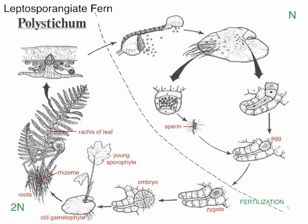In Polystichum, if you look at the bottom of the leaf, there's a series of little spots called sori. Each sorus is a cluster of sporangia and associated structures. Here's a sorus and a blowup of the sorus. We have a whole bunch of leptosporangia in this cluster and an indusium, which in Polystichum is a shield-shaped structure. In different ferns, the indusium is shaped in all sorts of different ways, and that's useful for identifying them.